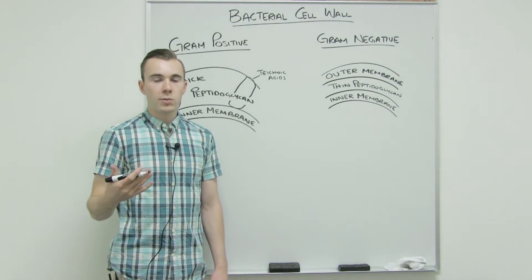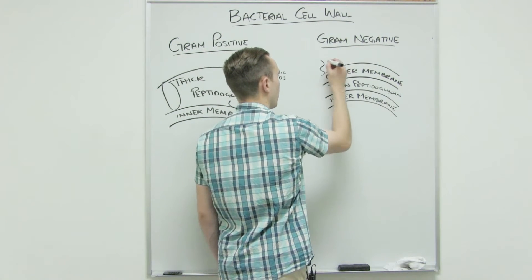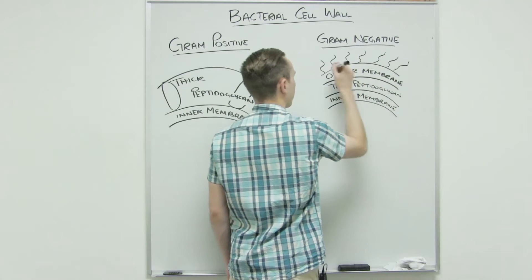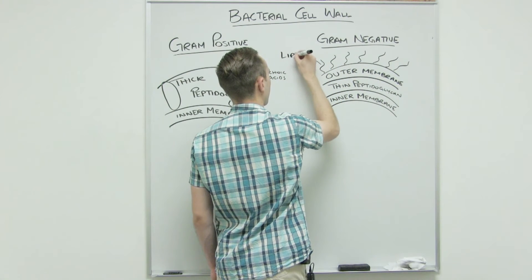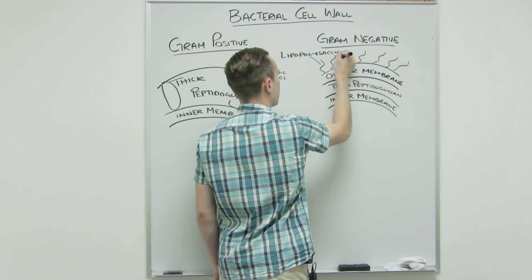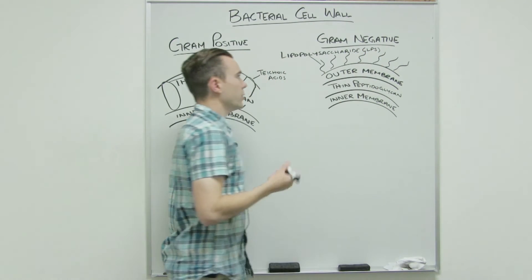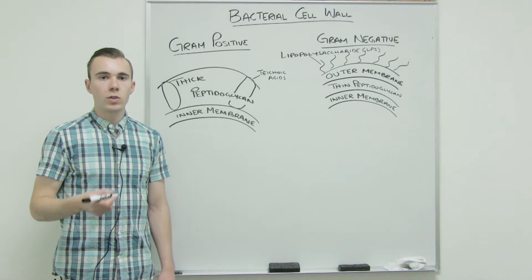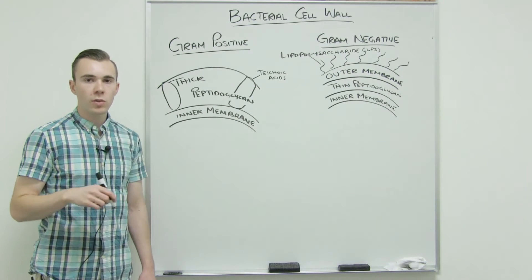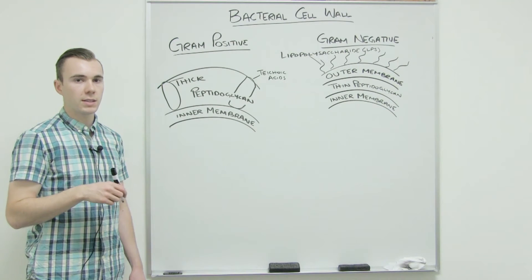Some additional structures that you need to realize with the gram-negative bacterial cell wall are that there's a structure in the outer membrane called lipopolysaccharide. So these squiggles that I'm drawing are going to be the lipopolysaccharide, which is commonly abbreviated as LPS. These will come into play when we talk about toxins, which is going to be further in the semester. So for right now, you just need to know the presence of them. But in the future, you're going to realize the importance of how it can cause disease in humans.